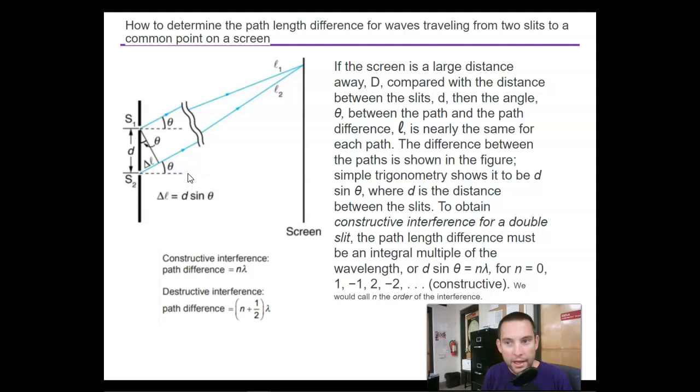Or d sine theta equals n times lambda, for n equals 0, 1, negative 1, 2. You get constructive.